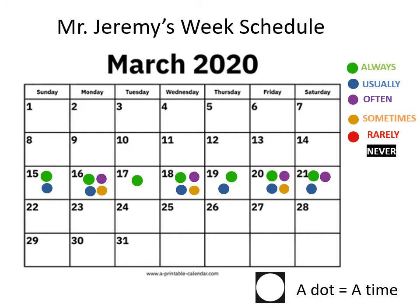Kế tiếp là 'sometimes' — các con có thể thấy chấm tròn màu cam xen kẽ với những ngày không có chấm, nghĩa là có ngày thầy Jeremy làm và có ngày không. Đối với chấm tròn màu đỏ 'rarely' và màu trắng 'never' thì chúng ta không thấy trên hình, bởi vì 'rarely' và 'never' nghĩa là hầu như không làm và không bao giờ làm.